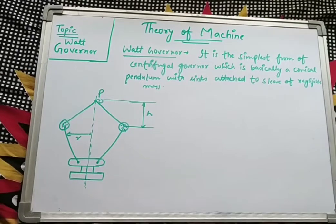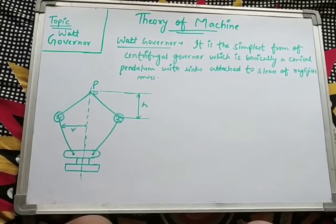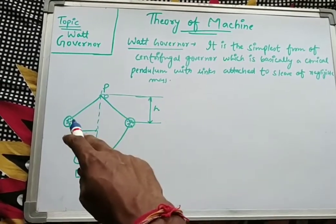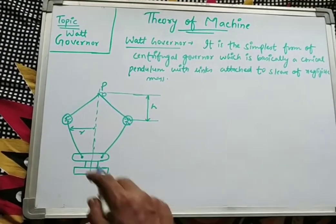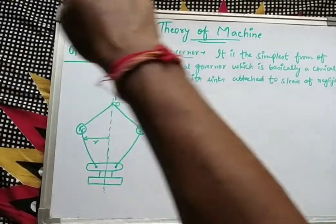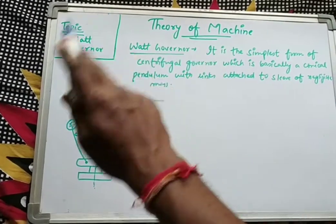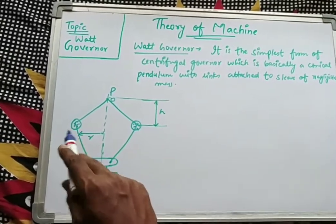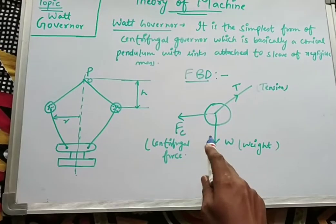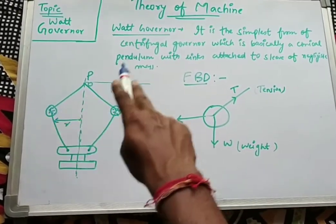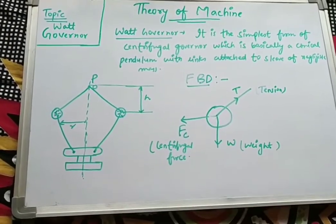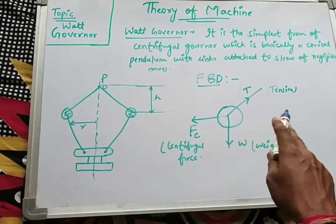Now let us consider the equilibrium of this ball. The ball is connected through a link, so there will be tension T. The second force is the self-weight of the ball W. Since the arms are moving outward in rotational motion, this ball will also have a centrifugal force Fc. So the free body diagram of the fly ball shows tension T along the rod, centrifugal force Fc acting outward, and self-weight W acting downward.